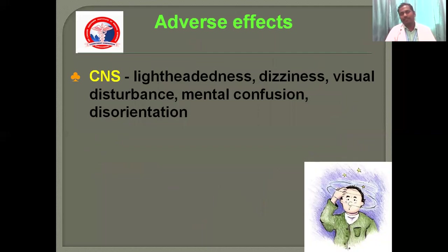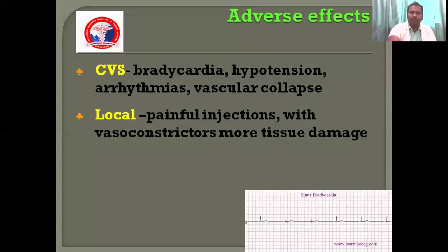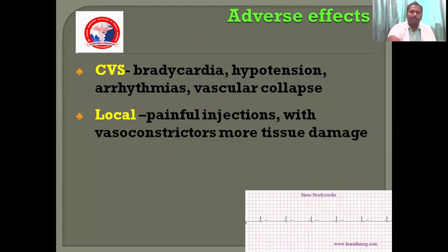Coming to adverse effects: mainly it will affect the central nervous system, causing light-headedness, dizziness, visual disturbance, mental confusion, and disorientation. In the cardiovascular system, it mainly causes bradycardia, hypotension, arrhythmia, and sudden collapse. Local infiltration causes a painful injection and with vasoconstrictors, more tissue damage.